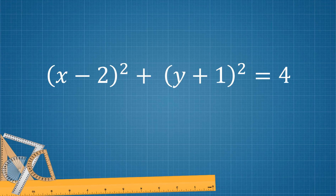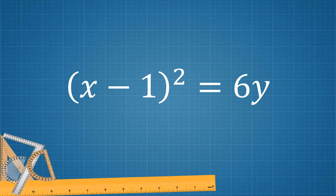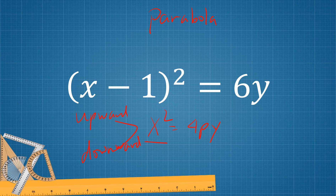Next example: (x minus 2) squared plus (y plus 1) squared equals 4. This follows x squared plus y squared equals r squared, so this is a circle and there is no orientation. The following example follows x squared equals 4py, so this is a parabola. Since the variable with the square is x, we're going to choose between upward and downward. Since the other side is positive, it opens upward.